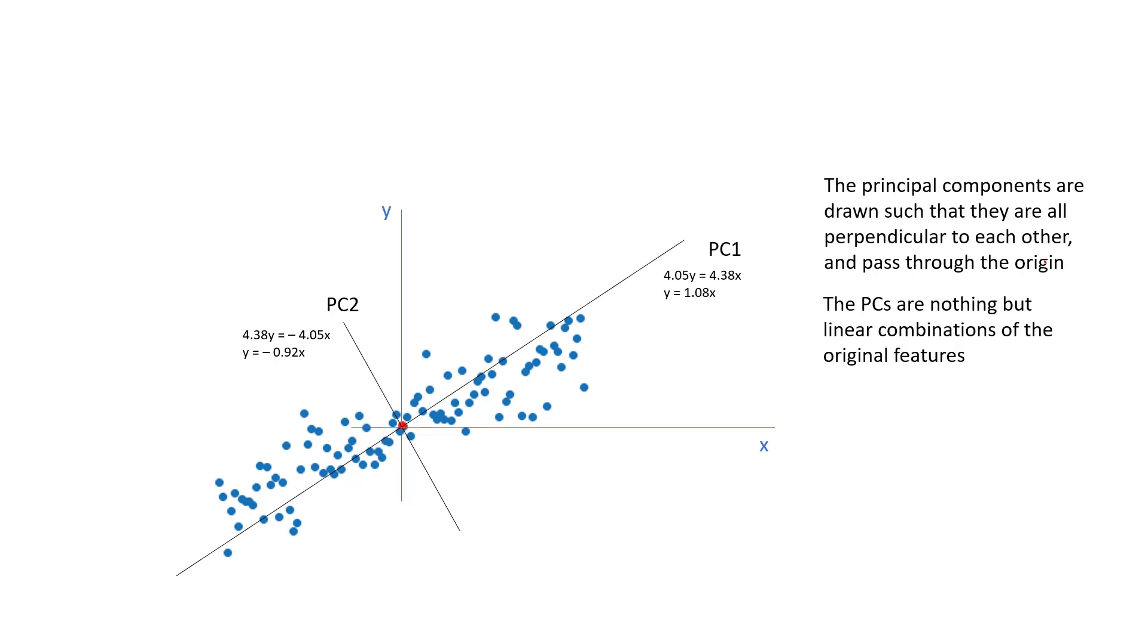Now, the PCs, the principal components are nothing but the linear combinations of the original features. Well, it is nothing but, if you see this x-axis, this is nothing but y is equal to 0 axis. And this y-axis, this is nothing but x is equal to 0. Similarly, this particular new axis that we have found, or that the PCA has found, this is y is equal to 1.08x.